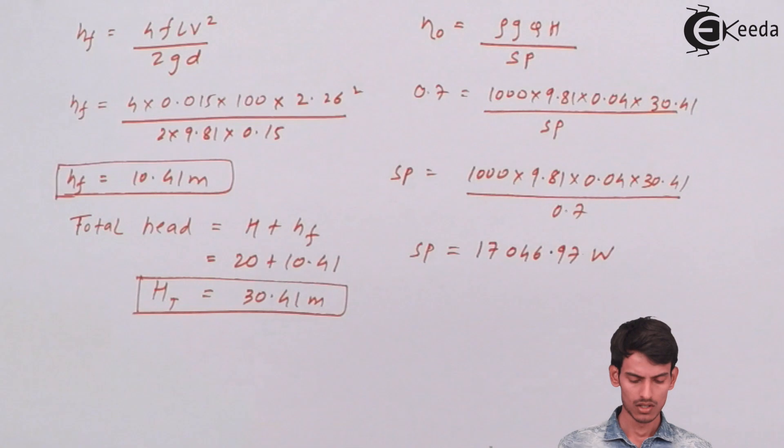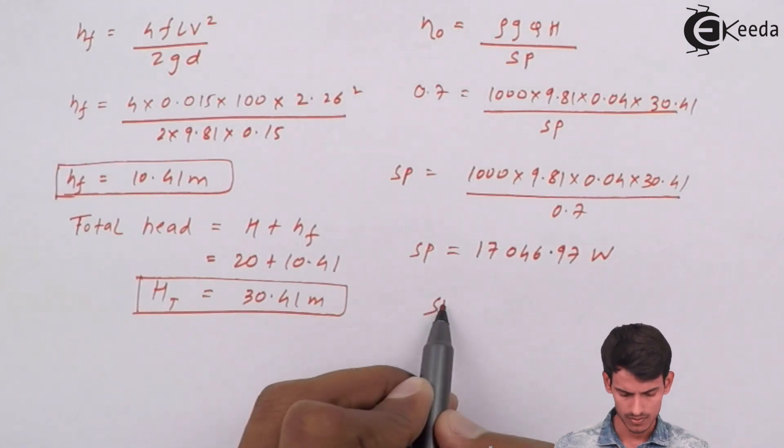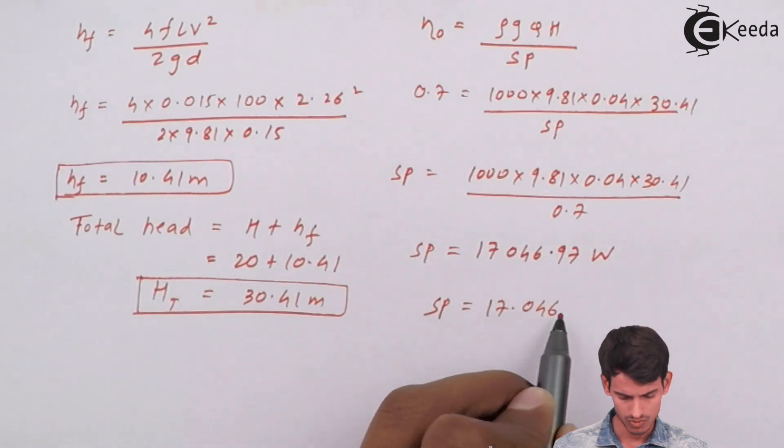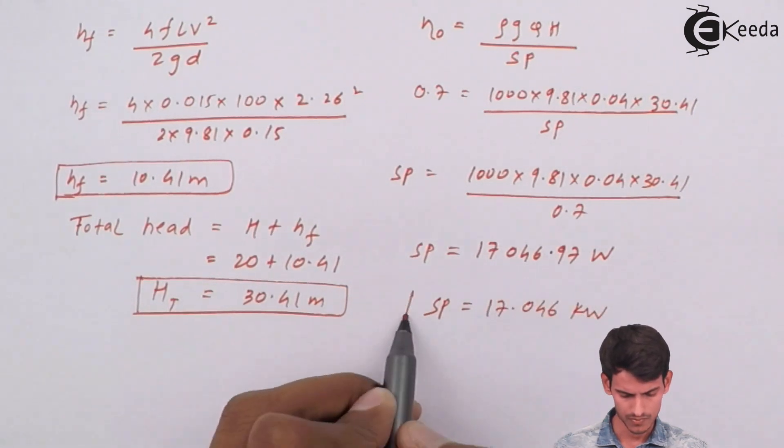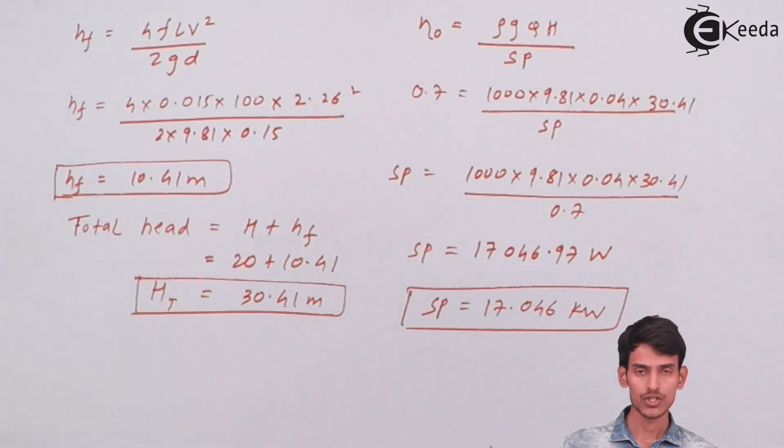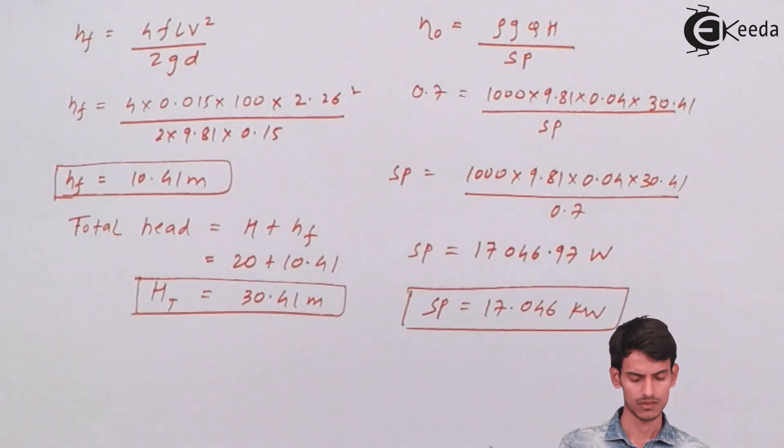So this is the shaft power that will be obtained from the pump - it comes to 17.046 kilowatts. That was all about this question. We had to find the shaft power and we found it. I hope you've understood this question. Thank you.